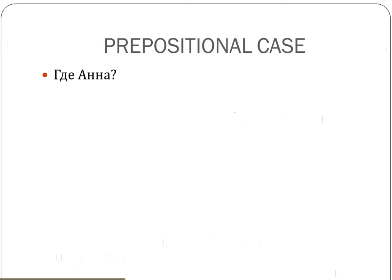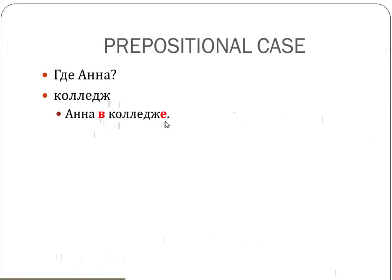So I want to show you something. If you wanted to ask where Anna is — где Анна? — let's say she's at the college. Анна в колледже. The minute I add в before the word 'college' to answer the question где, I need to add the Е ending. And since this is a masculine word, just add Е to it, and that's it. Анна в колледже.